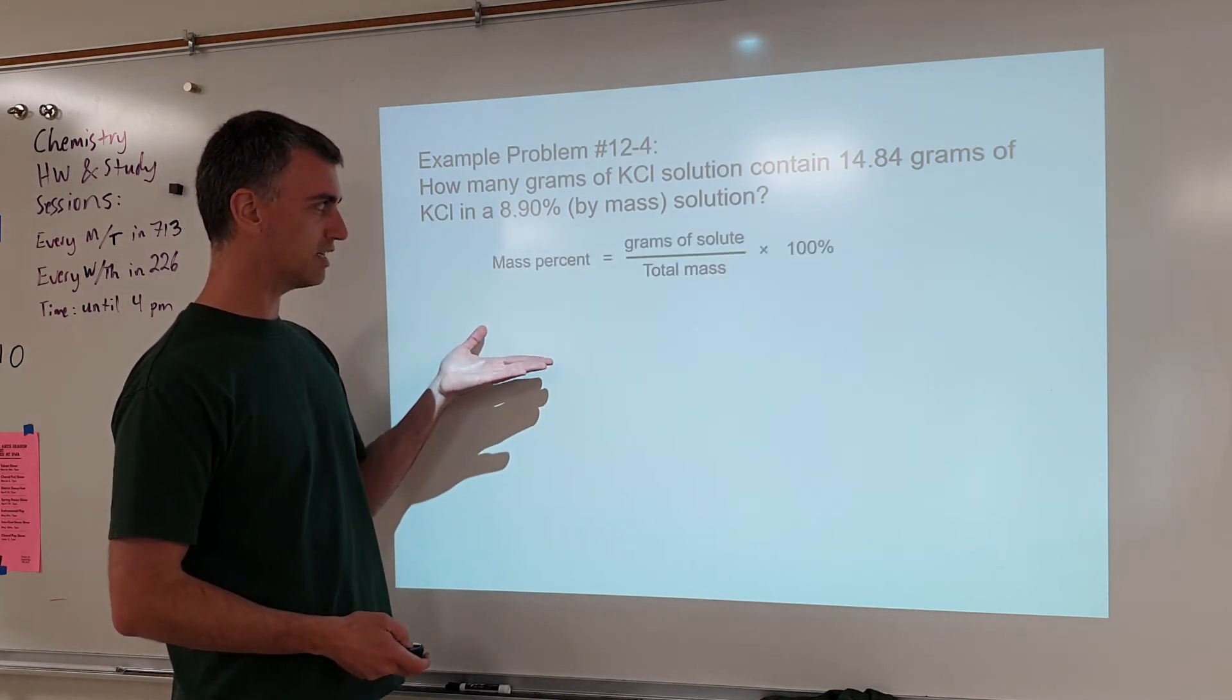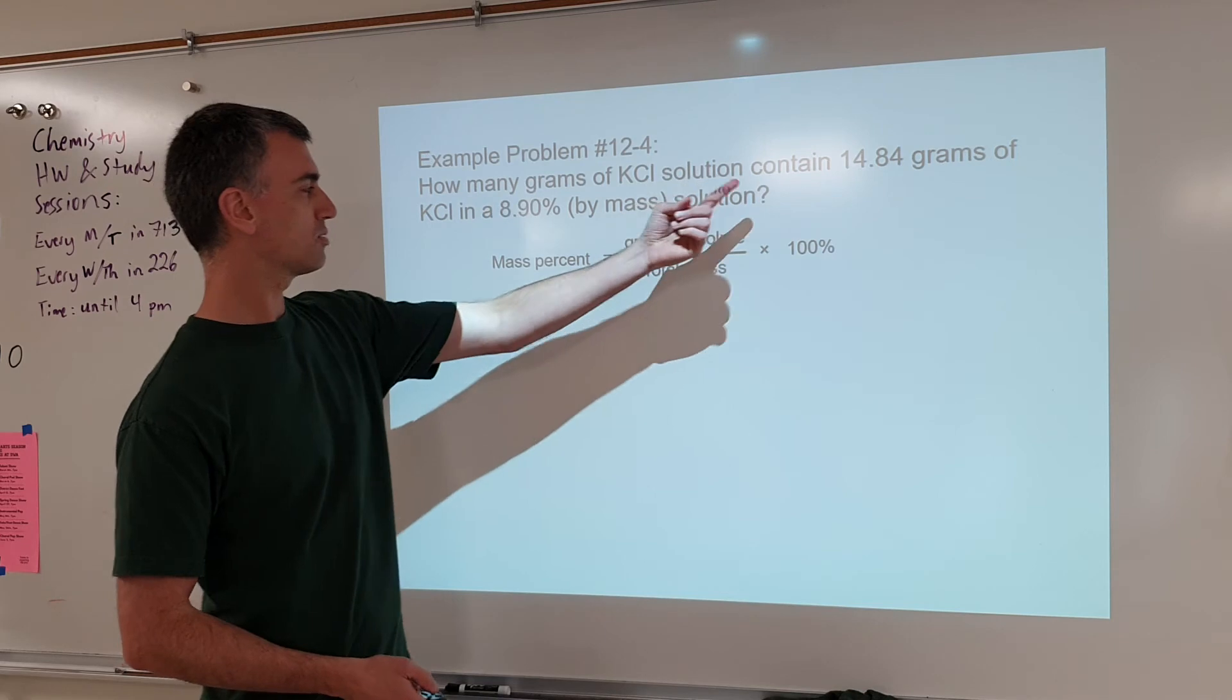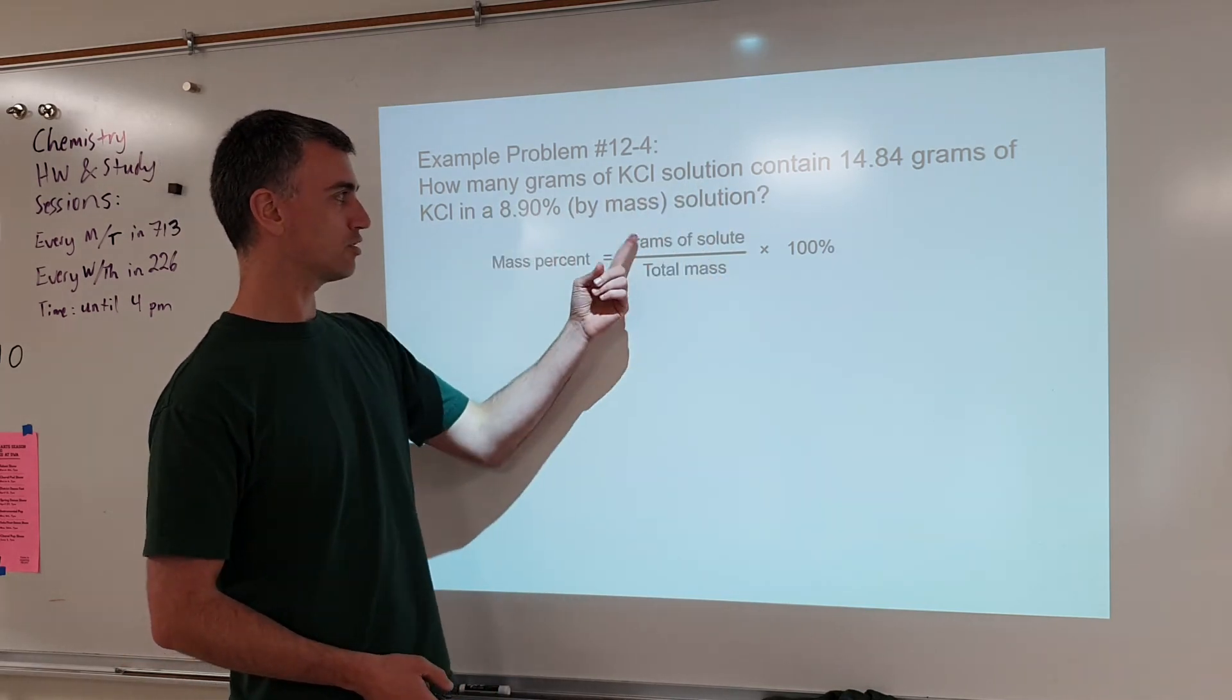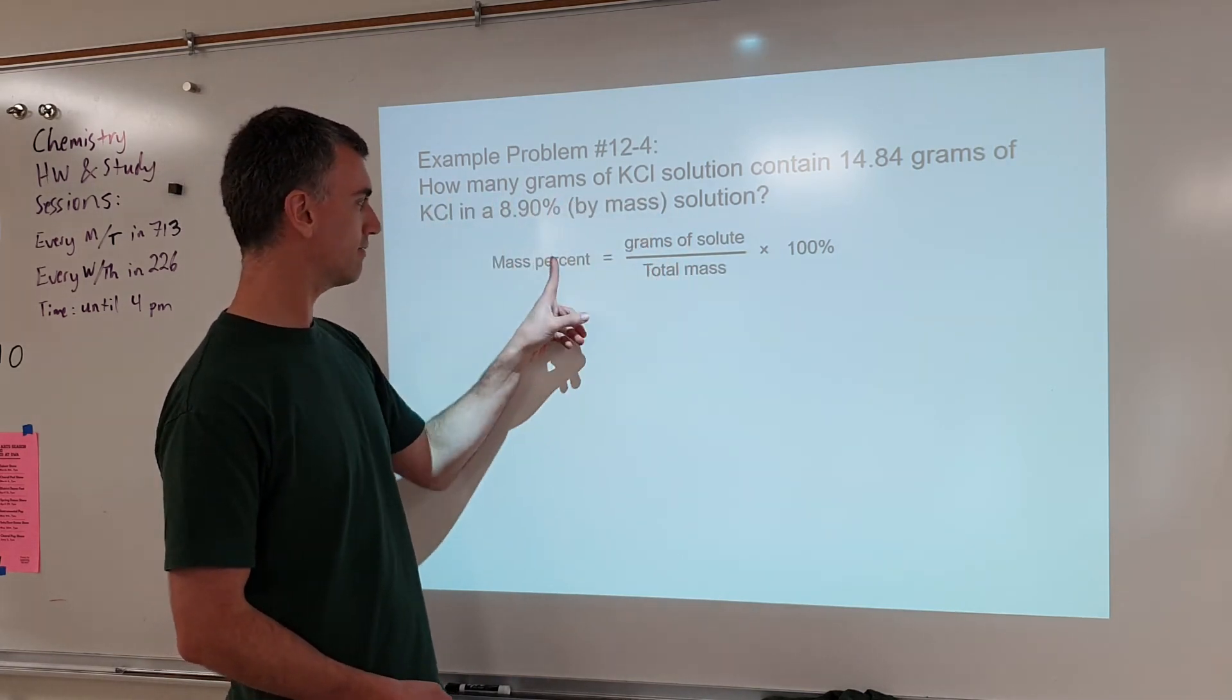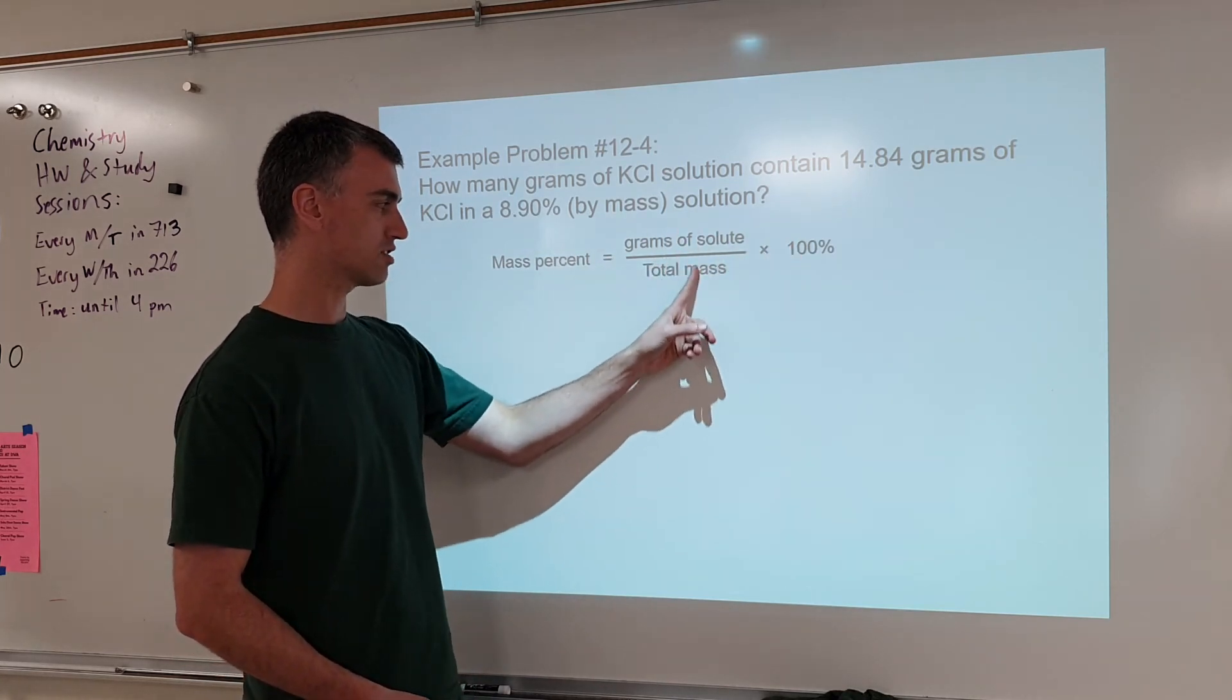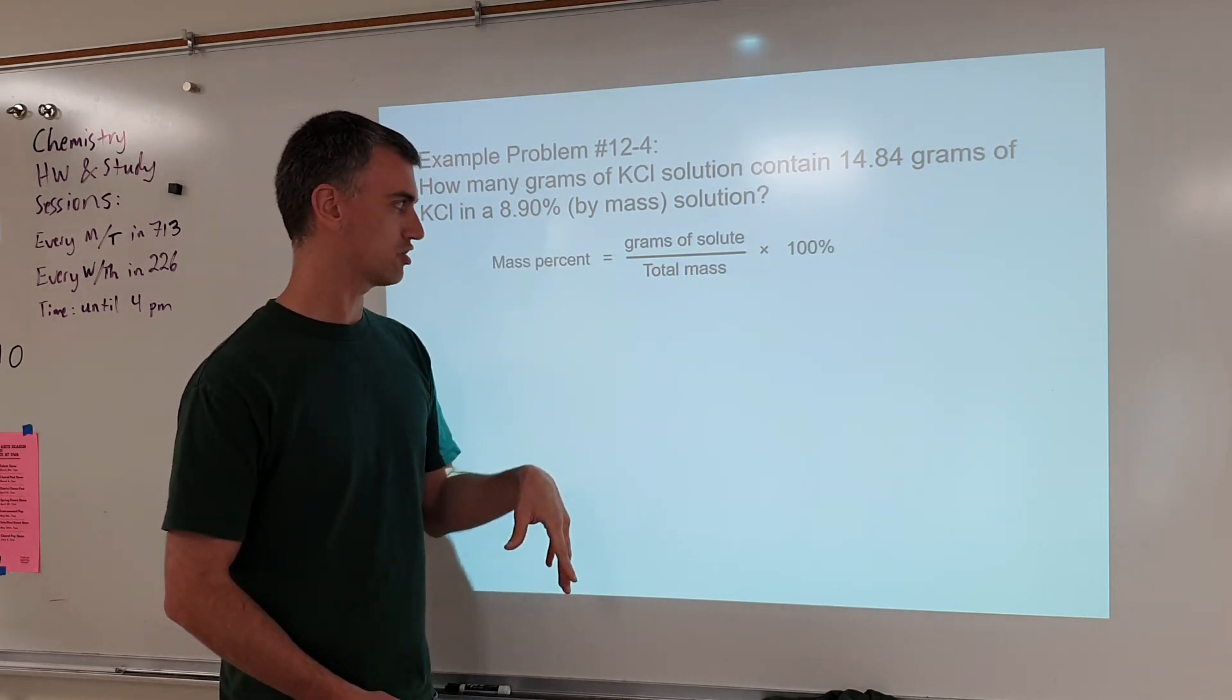Identify what you have and what you need. Understand that mass percent is this right here. Grams of solute. Since you have 14.84 grams of potassium chloride, that is your grams of solute. So this is this. Total mass. How many grams of solution? So you're being asked for this. So you have this. You have this. There's another number, and you're trying to solve for this. So you have to mathematically arrange to get this by itself, and then that allows you to just solve the question.